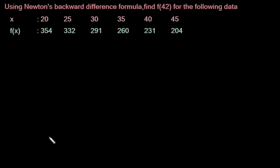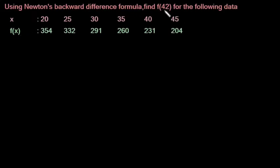Here is a problem: using Newton's backward difference formula, find f(42) for the following data. x is given, y = f(x) is also given, and we have to find out f(42). So this is the backward difference table we have to form.